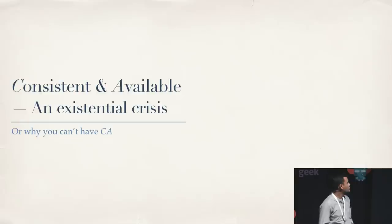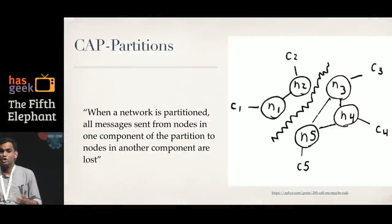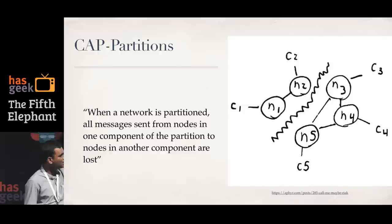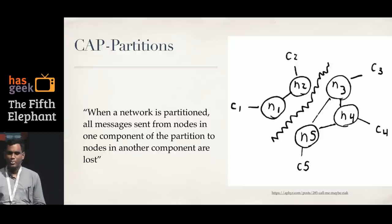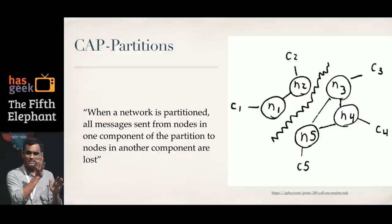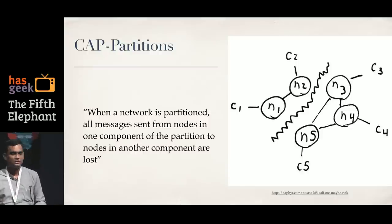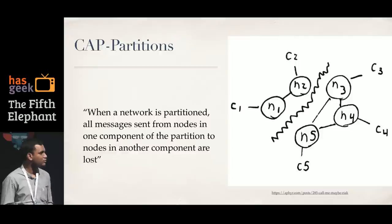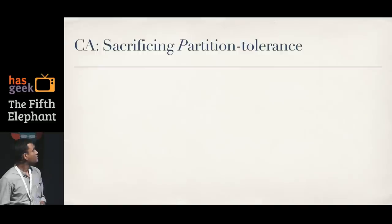Starting with the CA system: when we say CA, it means the system is not partition tolerant. What is a partition? In a database of five nodes, N1 to N5, when we say there's a partition, it means there's a network severance such that some nodes on one side can reach each other but not the other side. N1 and N2 can speak to each other but not to N3, N4, or N5. This definition comes straight from the CAP theorem paper.